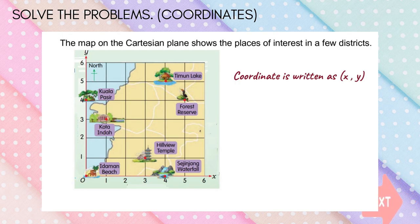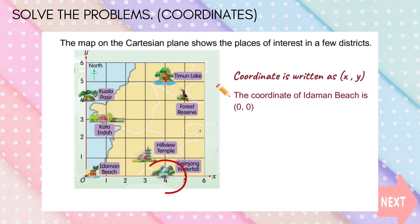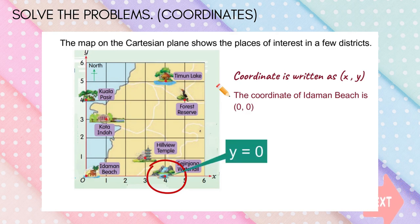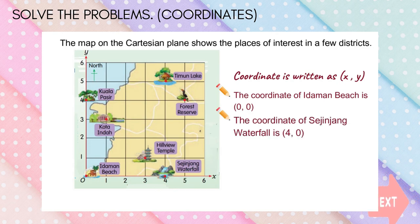Now let's see how to write coordinates. The coordinates of Idaman Beach, which is at the origin, is written as 0, 0. Look at Sejinjang Waterfall — it lies on the X axis. That means the coordinate of Y is 0. Look at the X axis: Sejinjang Waterfall is located at coordinate 4. Write the X coordinate then Y, so the coordinate of Sejinjang Waterfall is (4, 0).